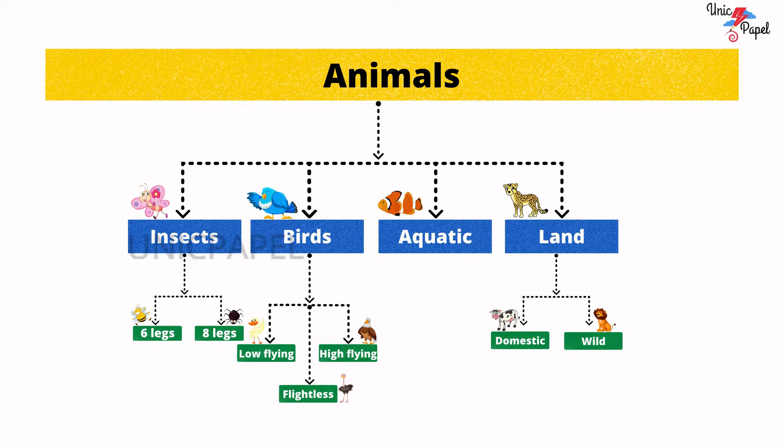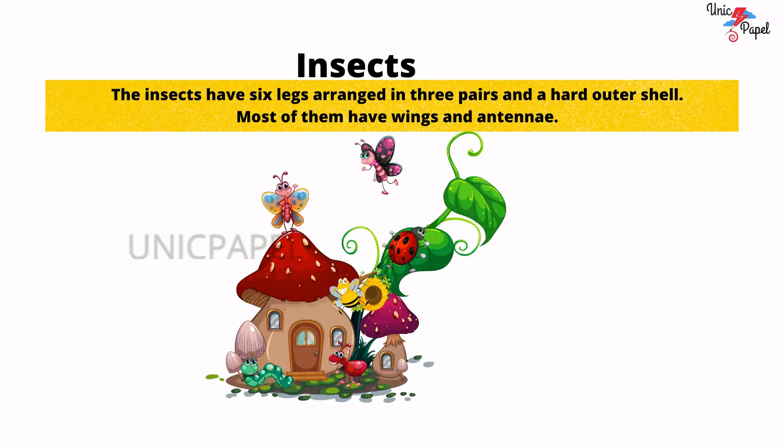Let us see them all in detail. Insects. The insects have 6 legs, arranged in 3 pairs, and a hard outer shell. Most of them have wings, antennae.